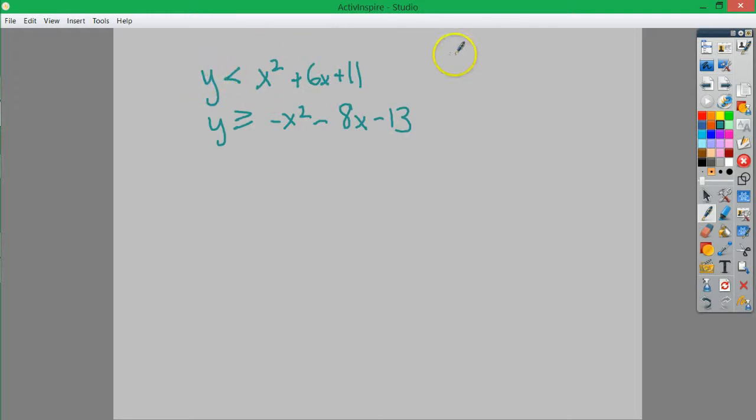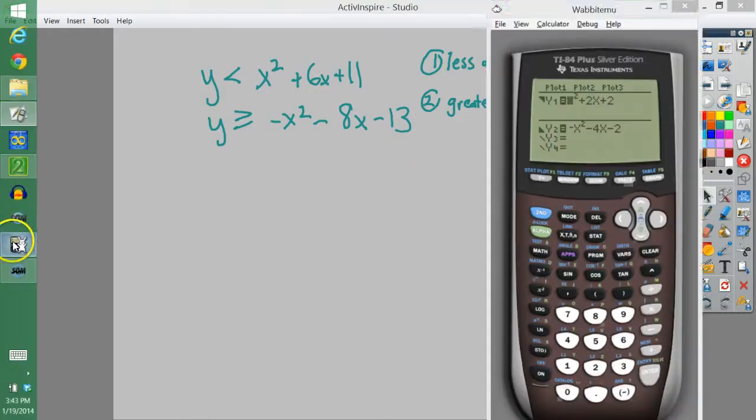So, this is the less one. So, I could say that the first graph is less and it's dotted. The second one is greater. And since it's greater than or equal to, it's solid. I put the 1 and the 2 here because once I type them in, that's the order in which they'll pop up on the screen.